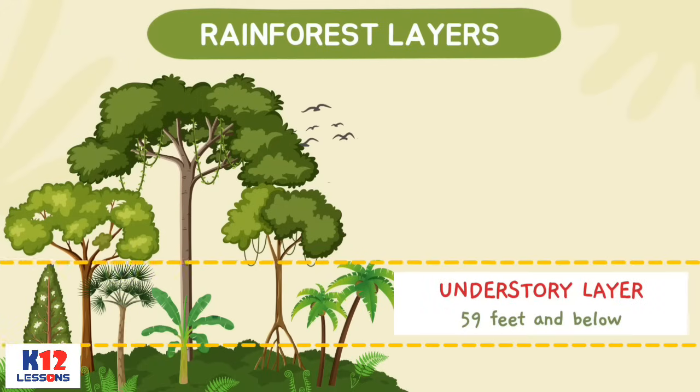The understory is about 59 feet and below, and consists of trunks of canopy trees, shrubs, and small plants.